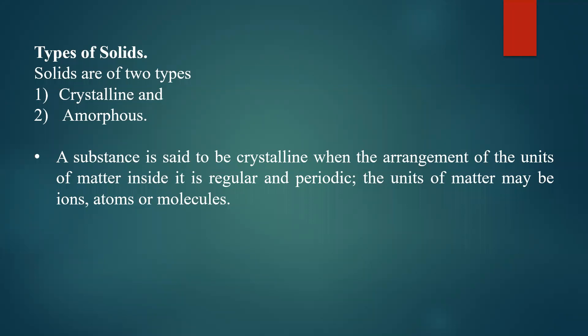In crystalline solids, atoms or molecules are arranged in a regular pattern. Atoms and molecules are called structural units of crystalline solids. If those structural units are arranged in a regular and periodic pattern, the solid is said to be a crystalline solid. Examples include NaCl, KCl, and sugar crystals observable in nature.